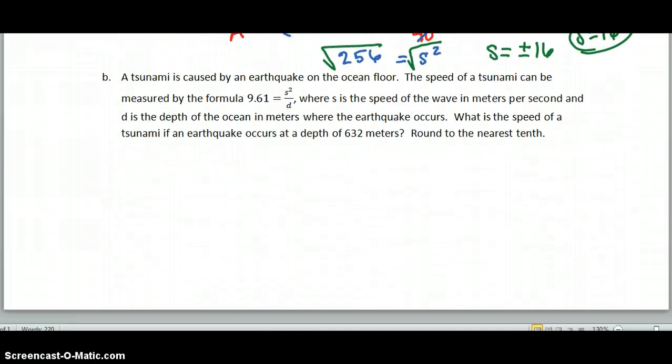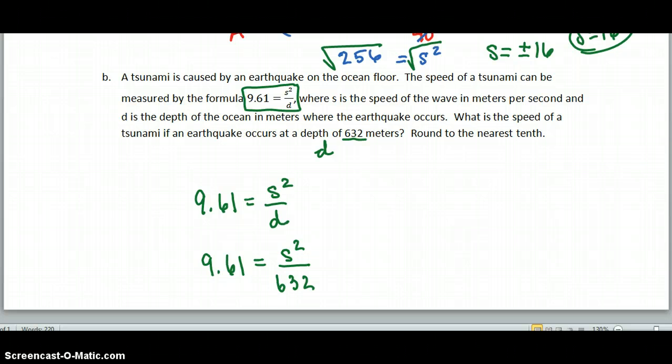All right. Another word problem. A tsunami is caused by an earthquake on the ocean floor. The speed of a tsunami can be measured by this formula. Again, it's a formula. I don't really know. I don't do a lot with tsunamis. But this is a formula, and they're going to tell us what the S stands for and what the D stands for, where S is the speed of the wave in meters per second, and D is the depth of the ocean in meters, where the earthquake occurs. What is the speed of a tsunami if an earthquake occurs at a depth of 632? So they've given us here the D. So I take my formula, S equals the square root of 9.61D. D is 632. So to undo my division, I'm going to multiply both sides by 632, and 632 will cancel.